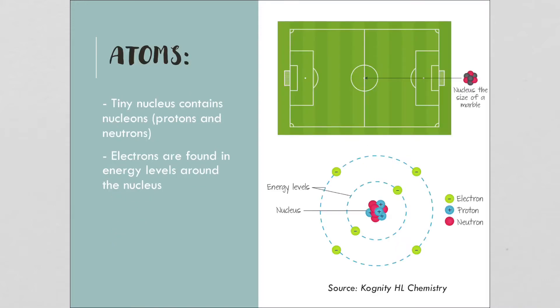Atoms have a tiny nucleus with nucleons within, and those nucleons are two different things: either protons or neutrons. This illustration that was presented by Cognity shows that if you had a football field, the very tiny dot right here in the middle, the size of a marble, would be the nucleus. The rest of it would be empty space and the electrons surrounding the nucleus.